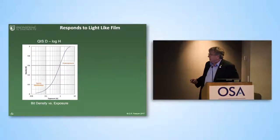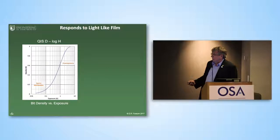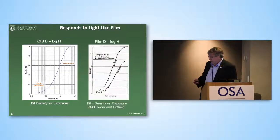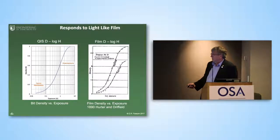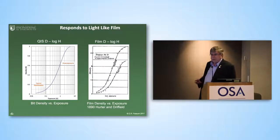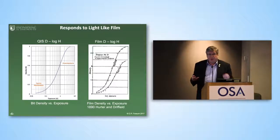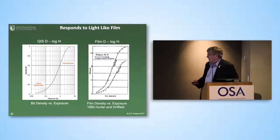If you plot that same data on a D versus log exposure axis, you get a nice S-shaped curve. This is the linear region, but because it's a log it looks curved. This is sparse exposure, and overexposure is the upper part of the S. Just for fun — if you look in 1890 literature — Hurter and Driffield did the same measurements on photographic plates and it's exactly the same curve, because the statistics of photons hitting unit cells and causing a change is exactly the same statistical nature.